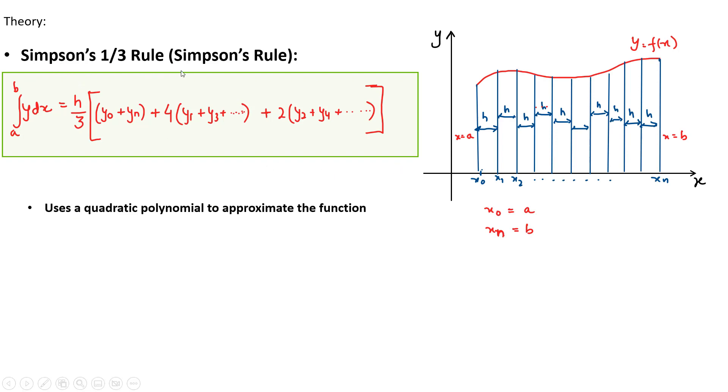This rule simply says that the numerical approximation of the integration can be achieved using this formula, where h is the step size or the evenly spaced subinterval size. The integral of f(x) dx from a to b can be calculated as h by 3 times y_0 plus y_n plus 4 times the odd terms plus 2 times the even terms.